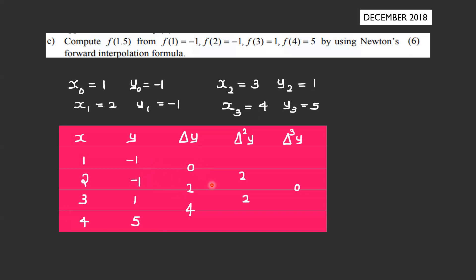Computing the differences: Δy values are 0, 2, 4. Delta square y: second value minus first value gives 4 - 2 = 2, and 2 - 0 = 2. Delta cube y: 2 - 2 = 0.